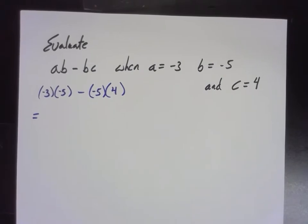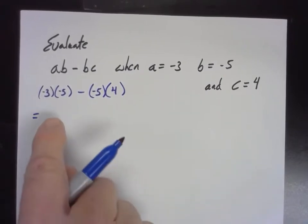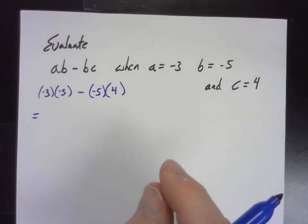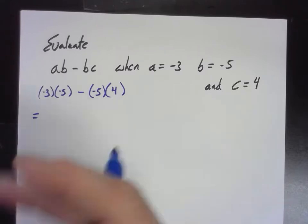So there's nothing inside of a parenthesis we can do, is there? But the next thing, well, I guess the next thing to do would be exponents, wouldn't it? There are no exponents. So we do multiplication next.